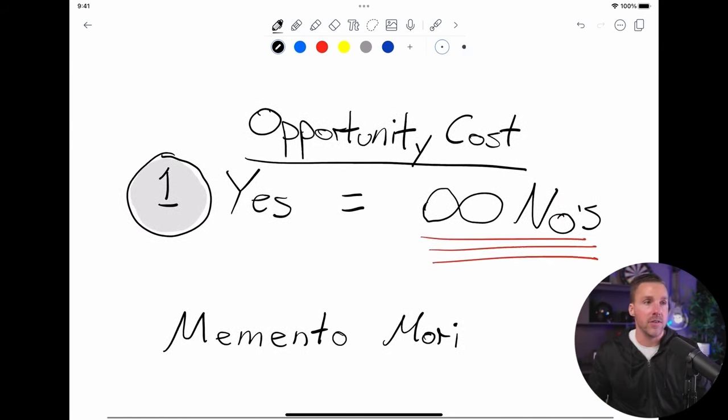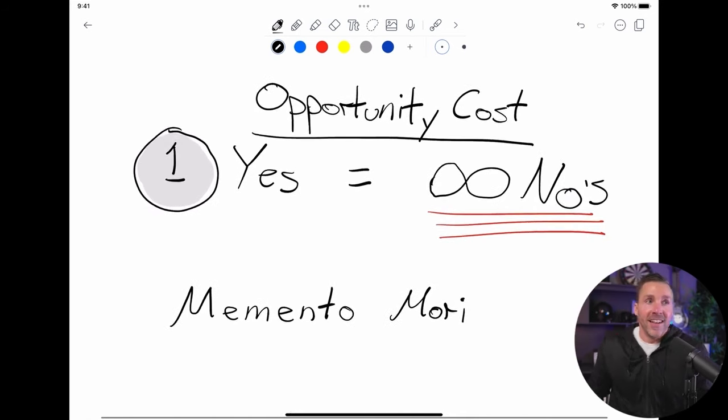Also, opportunity costs. Let's move it up here. Here's the thing with opportunity costs. Every time you say yes to something, to one thing, you're saying no to an infinite number of other things that could happen in that time.